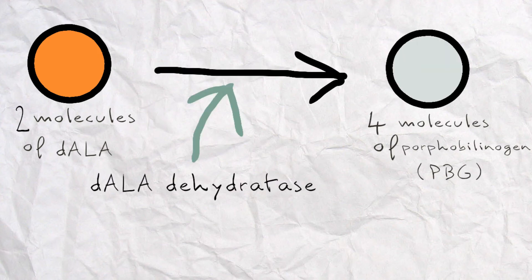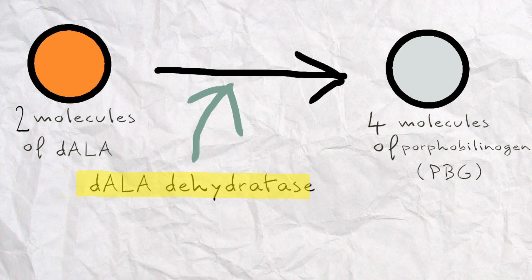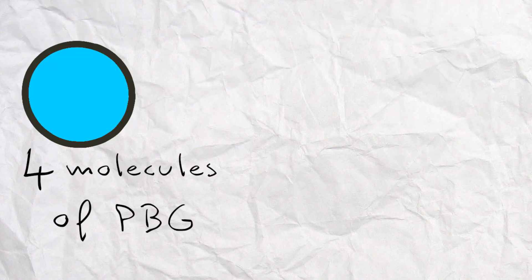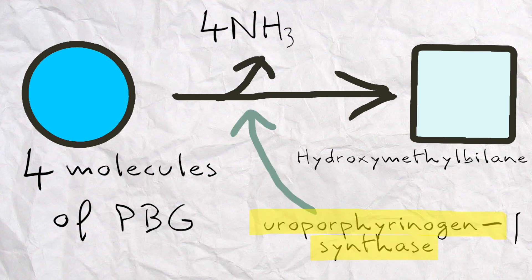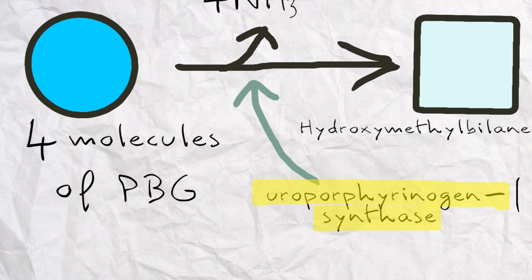Step 3: Four molecules of PBG will bind together to form hydroxymethylbilane with the help of uroporphyrinogen-I synthase. At the same time, it will release four molecules of ammonia.